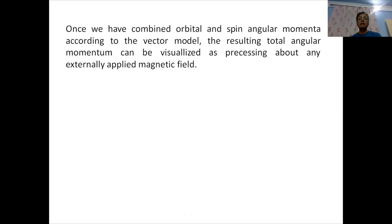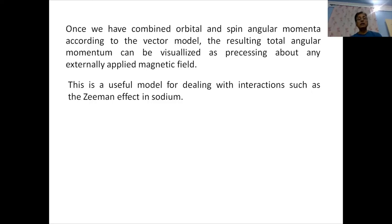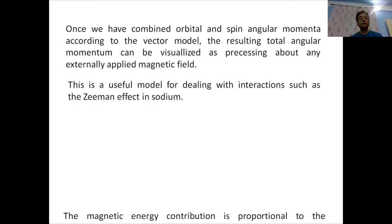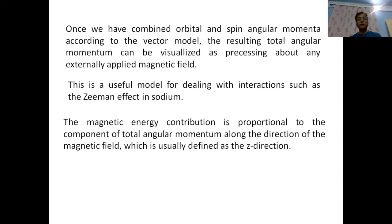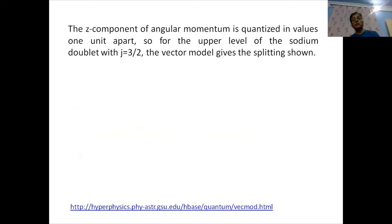Once we have combined orbital and spin angular momentum according to the vector model, the resulting total angular momentum can be visualized as precessing about any externally applied magnetic field. We have orbital momentum and spin angular momentum combined together to make a resultant angular momentum, which may be considered to be precessing about any external axis in the direction of the applied magnetic field. In sodium, the magnetic energy contribution is proportional to the component of total angular momentum along the direction of the magnetic field, usually defined as the z-direction. The z-component of angular momentum is quantized in values one unit apart.